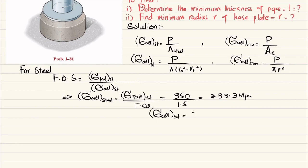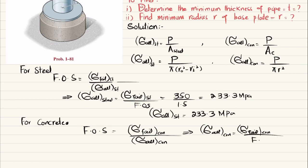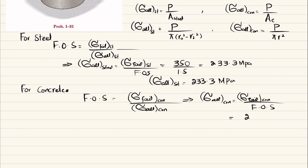The allowable normal stress in steel is 233.3 MPa. For concrete, using the same formula: factor of safety equals failure stress in concrete divided by allowable stress in concrete. So the allowable stress in concrete equals 25 MPa divided by 2.5, which gives 10 MPa.